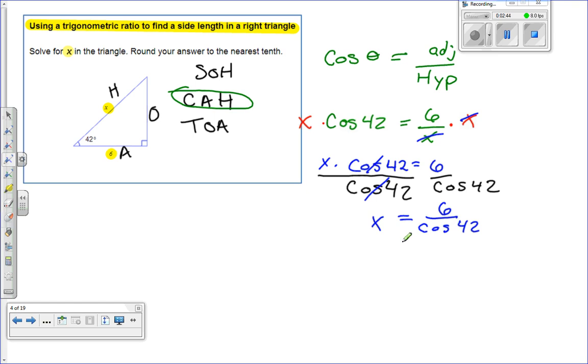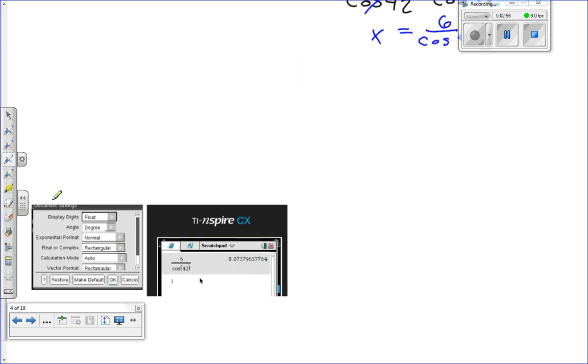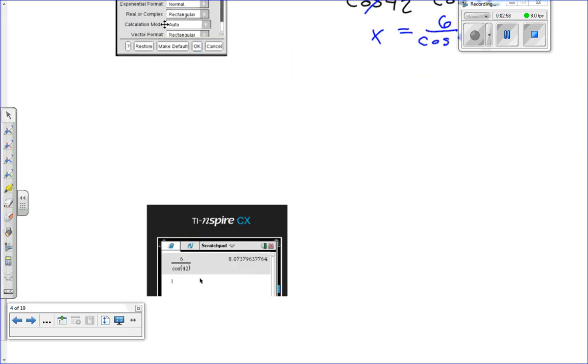Now, what does that mean? You're going to need your answer to the nearest tenth, which is one digit. So you're going to want to go into your calculator and make sure you have certain settings set right.